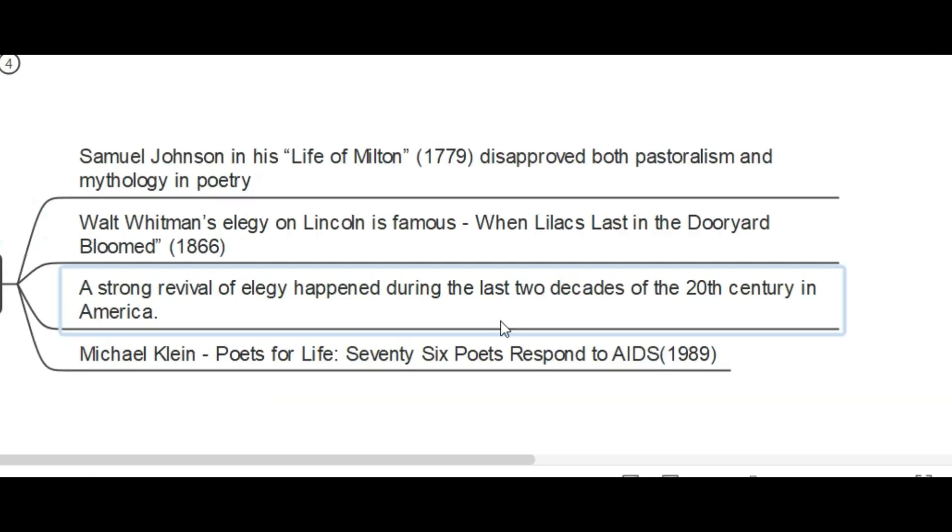And further, some extra facts. Samuel Johnson, in his Life of Milton, published in 1779, disapproved both pastoralism and mythology in poetry. So, he could not approve using pastoralism and mythology in poetry.